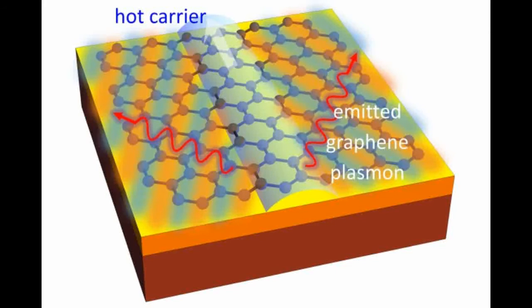Just as breaking the sound barrier generates a shockwave of sound, in the case of graphene, this leads to the emission of a shockwave of light trapped in two dimensions.